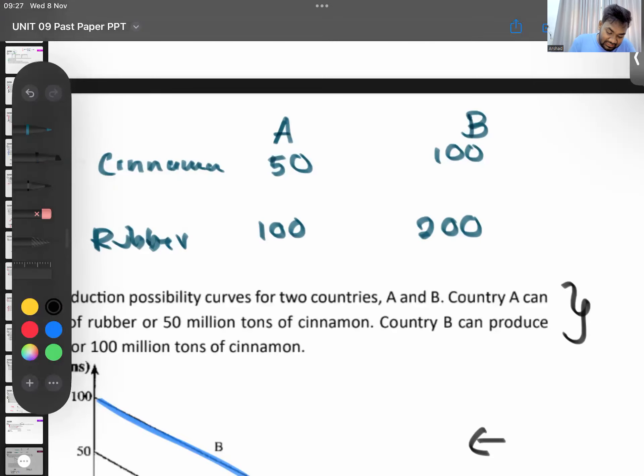Calculate the opportunity cost using the method. To produce 50 cinnamon you sacrifice 100 rubber, so foregone divided by gain, opportunity cost is 2 units of rubber. Here also to produce 100 cinnamon you sacrifice 200 rubber, foregone divided by gain equals 2 rubber. The opportunity cost is the same. If the opportunity cost for this good is the same, the opportunity cost for the other good will also be the same - it's the reciprocal. Here it will be 50 divided by 100, 0.5 cinnamon. Here it will be 100 divided by 200, 0.5. So does anyone have the comparative advantage?